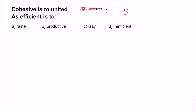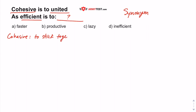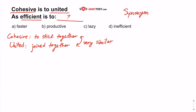In this question we're also looking for a synonym. This is a relationship type of question — you have cohesive is to united, and those are synonyms. The way I could tell is because cohesive means to stick together, and united means joined together — these are very similar. So that's how I knew we were looking for a synonym: by identifying the relationship between the two given words.